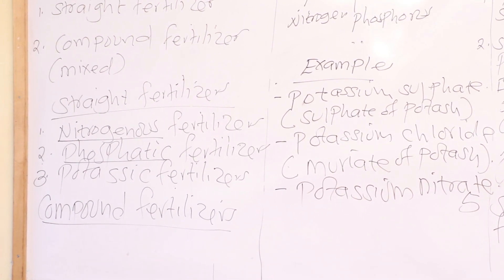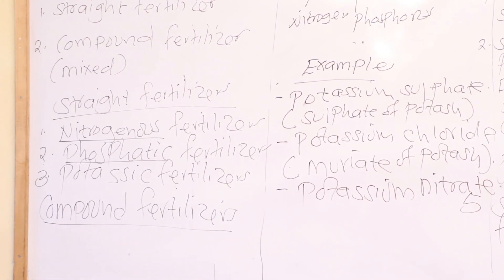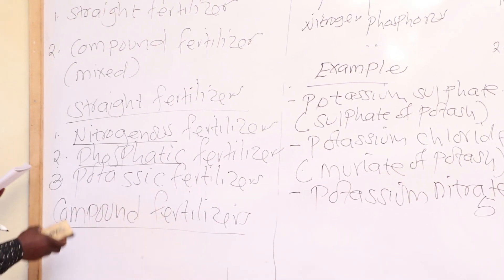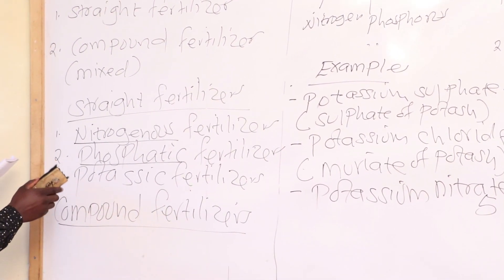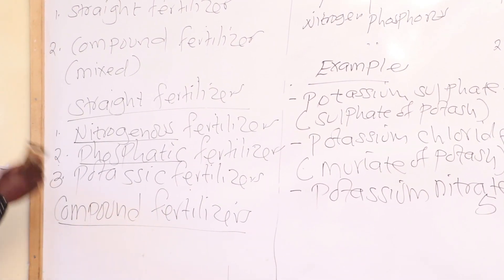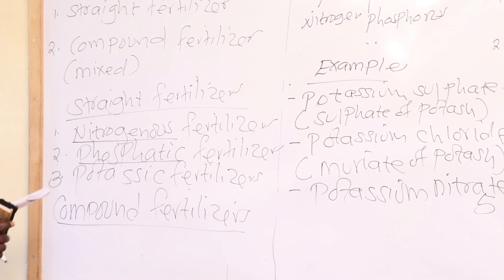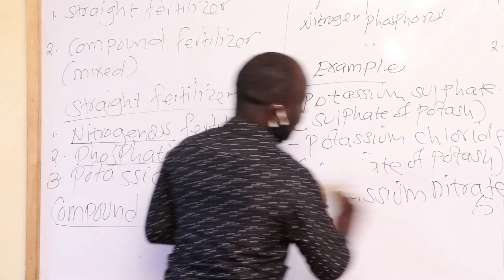So we are done with straight fertilizers — that is nitrogenous fertilizers, phosphorus fertilizers, and potassium fertilizers. Now let's look at compound fertilizers.